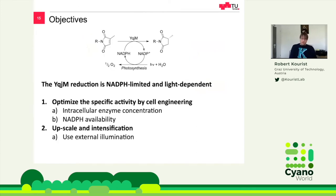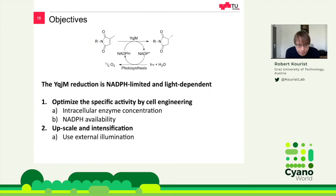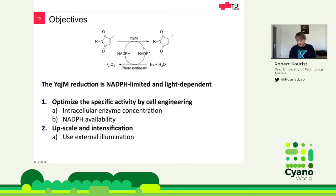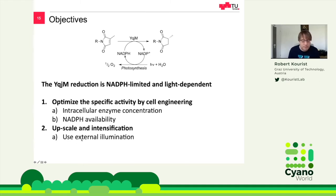Our objectives were to make this reaction faster and to see if we can implement it in a scalable setting. We chose this reaction because it is so fast — we think it is NADPH limited and also light dependent. We wanted to optimize specific activity by cell engineering: on one hand, by producing more enzyme in the cell; on the other hand, by providing more NADPH. The second part of the talk will be about upscaling.